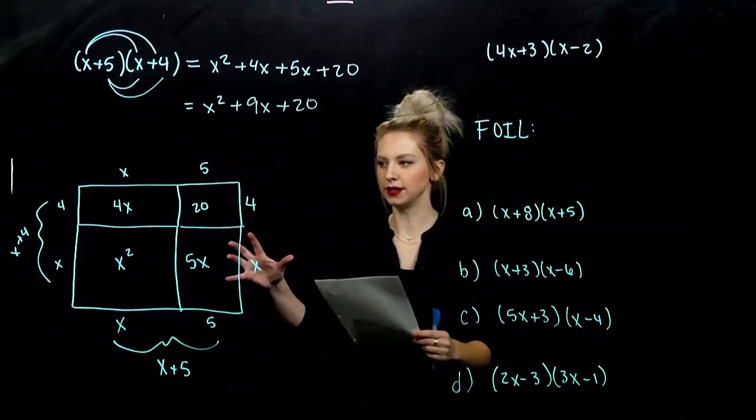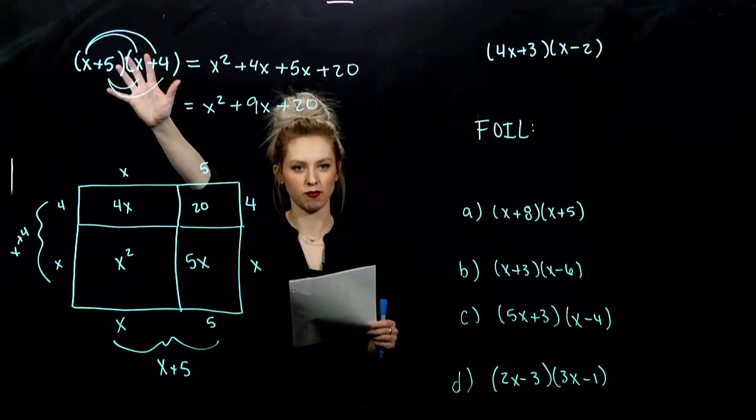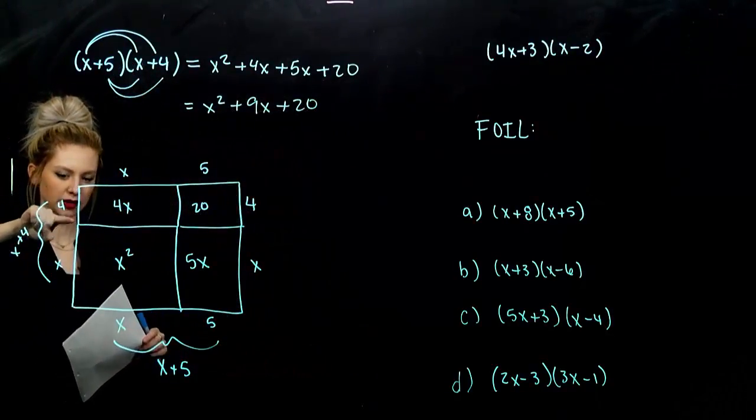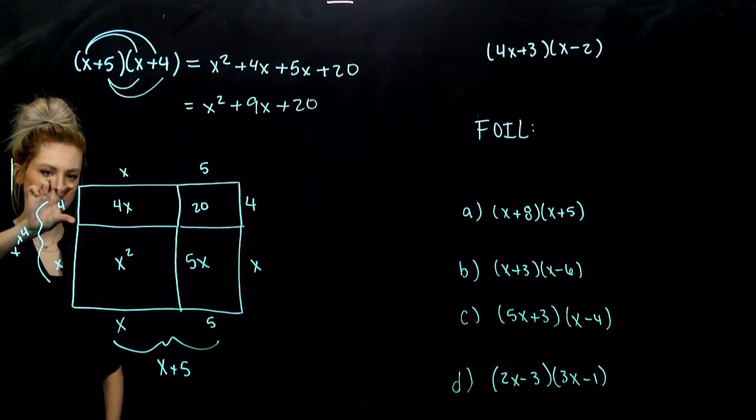So, we can visualize this with a picture. This product right here of binomials. So, what's going on? Over here, the length of this side is x plus 4. This chunk is worth x. This chunk is worth 4.